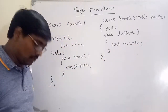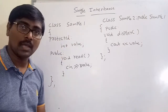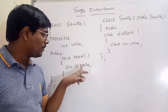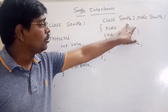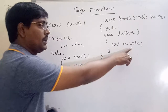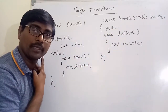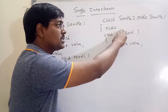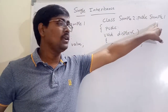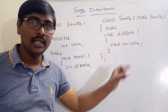Observe carefully — value is the protected data member available in class sample1. By using the read function I read the value. In sample2's display function I am printing value. Actually, value is not declared in class sample2, but even though it is not declared there, through inheritance it is available because sample2 is created from parent class sample1.